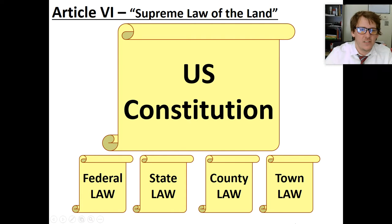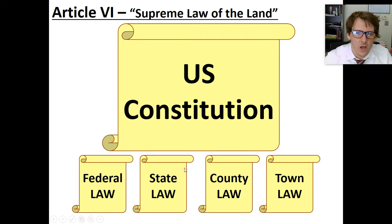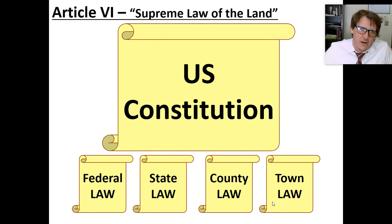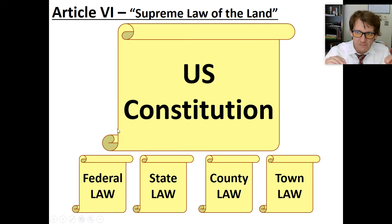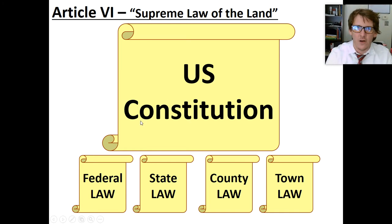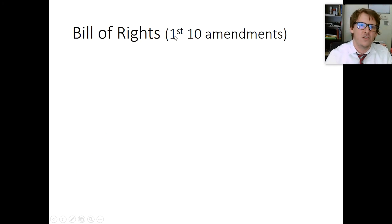Article 6: the U.S. Constitution is the supreme law of the land — number one. Federal law, state law, county law, town law — all the laws we've added over the last 200 years are inferior. Every law that we write must follow the Constitution. If you want to make a law today, it must follow the words written in the original Constitution.